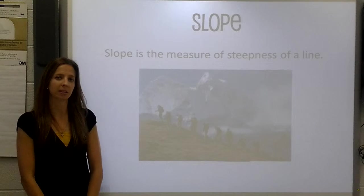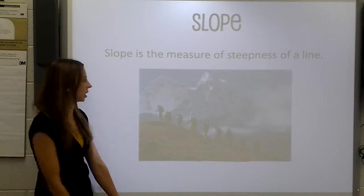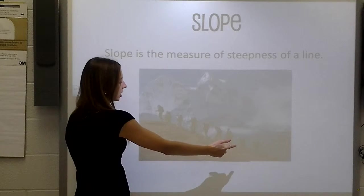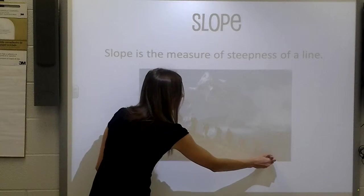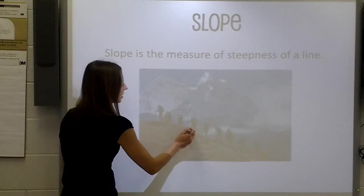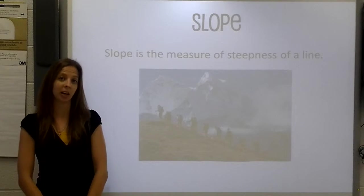Slope is the measure of steepness of a line. If we take a look at this picture here, we can see that these hikers are walking up a mountain. The mountain that they are walking up, we can measure the slope of this line right here to determine how steep of an angle they are climbing.